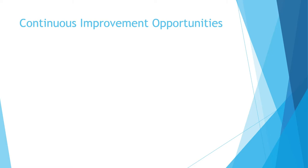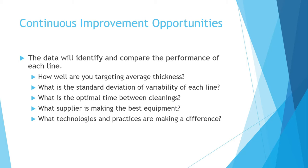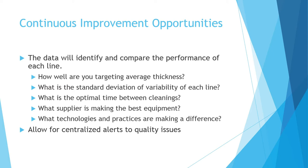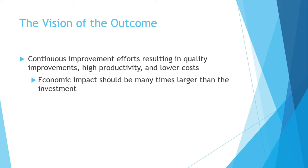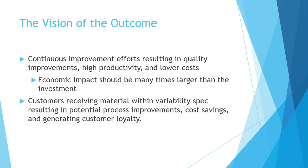Now we're talking about the continuous improvement opportunities we have from this data. The data will identify and compare the performance of each line — how well we're targeting average thickness or standard deviation of variability for each line, the optimal time between cleanings, what equipment suppliers are making the best equipment, and what technologies and practices are making a difference. This also allows us to centralize alerts to quality issues with our data management software, and we can also do statistical process control. The vision is that continuous improvement efforts will result in quality improvements, higher productivity, and lower costs, with an economic impact many times larger than the investment. Customers receive material within variability spec, resulting in process improvements, cost savings, and customer loyalty.